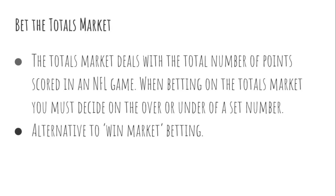The second tip is especially for newer sports bettors: bet on the totals market rather than the win market. The totals market is where you bet over or under a combined point total. For example, in a Raiders vs. Chiefs game, 46.5 points might be the line — you pick the over or under. This is a great market if you're newer to sports betting.